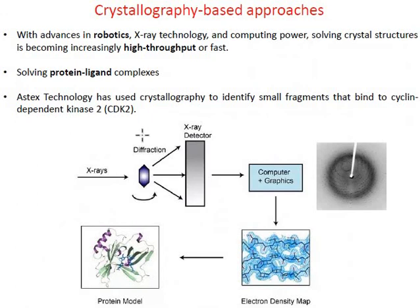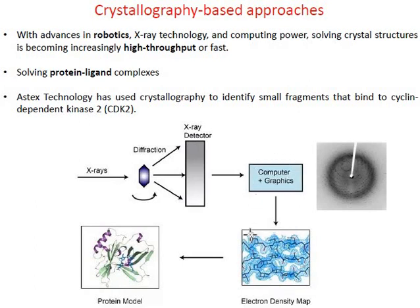Crystallographic methods can also be used for identifying fragments. Molecules are first turned into crystals, and X-rays are passed through these crystals. The rays are diffracted, producing a diffraction pattern. This diffraction pattern is converted into an electron density map using powerful computers, and the electron density map is further converted into protein-ligand models, which can be studied with visualizer software.